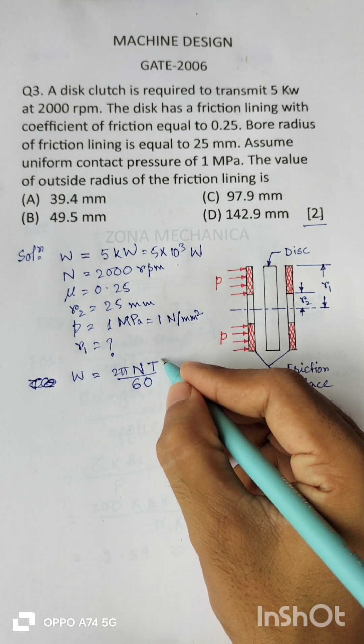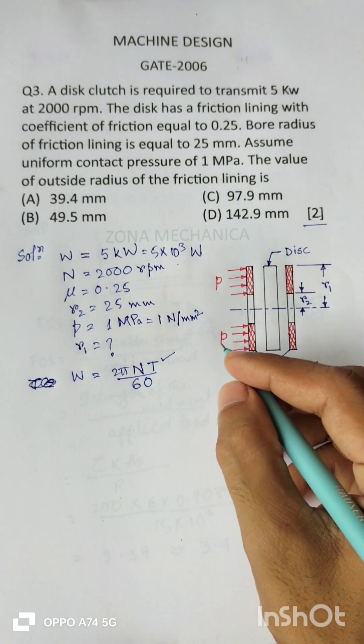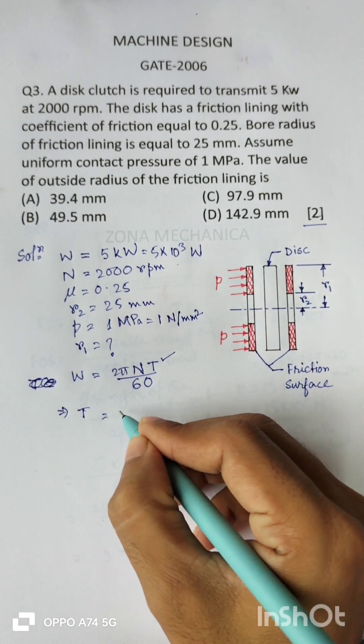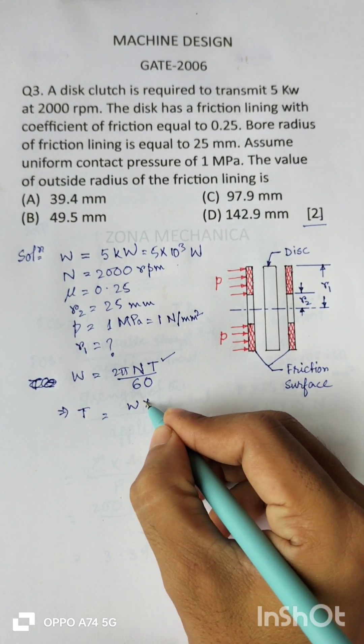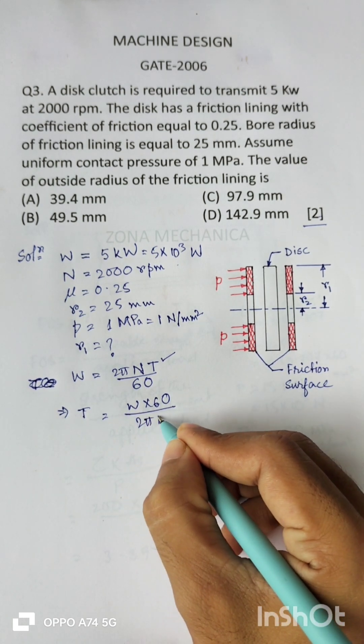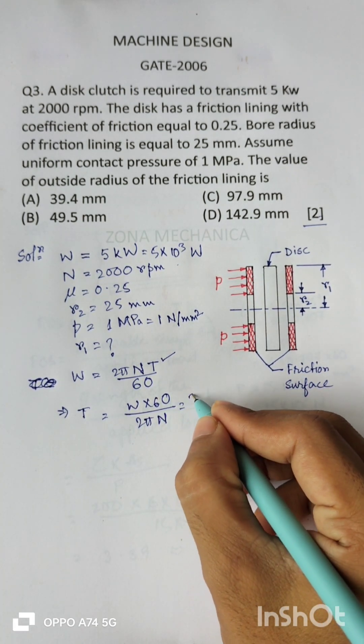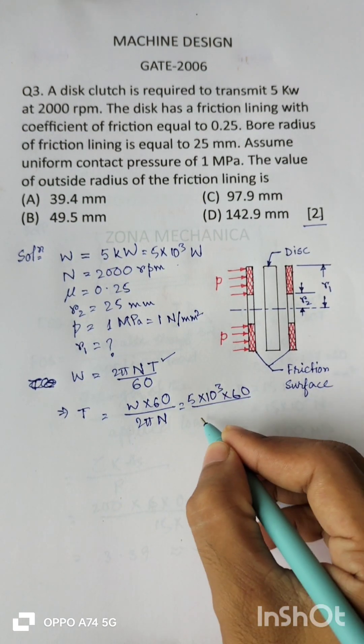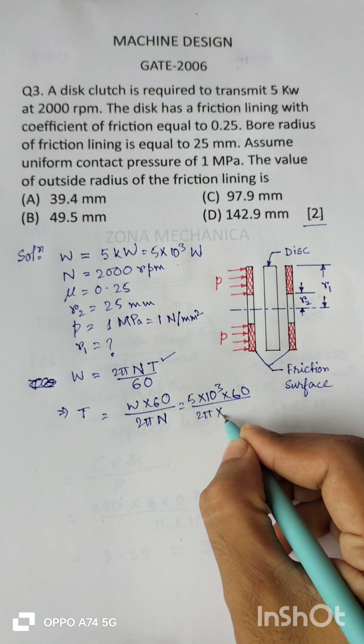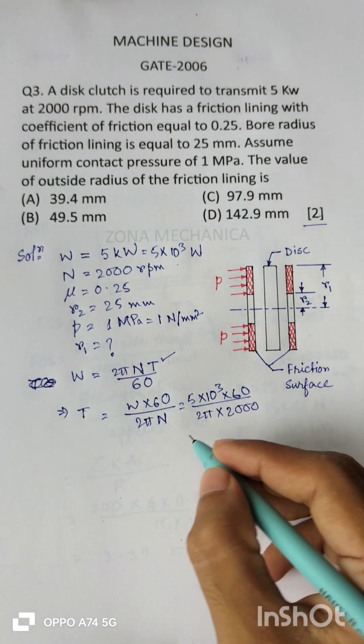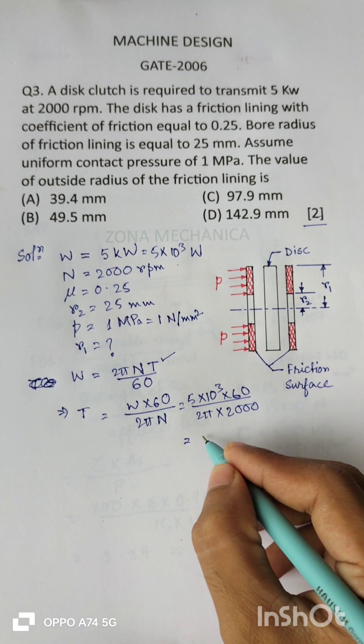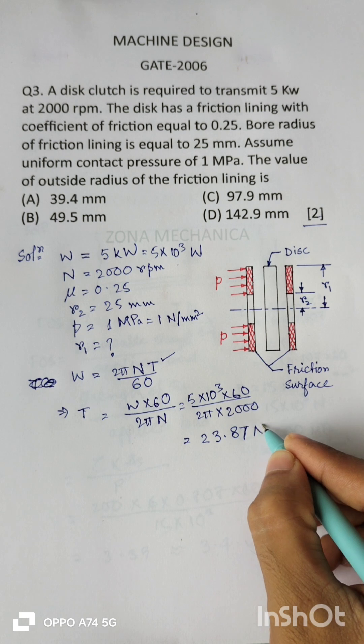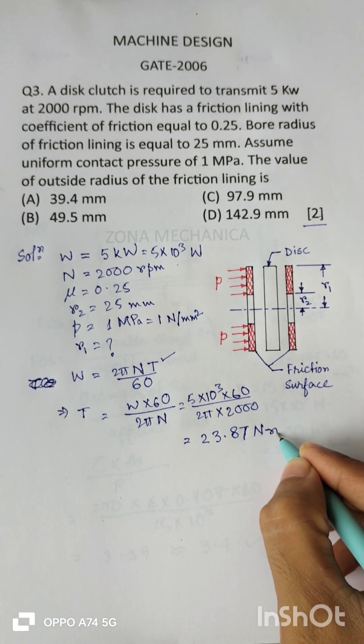From here, T is the torque transmitted by the clutch. We can calculate, so T will be W into 60 divided by 2π into n, so that is 5 into 10 to the power 3 into 60 divided by 2π into 2000, which will give 23.87 newton meter.